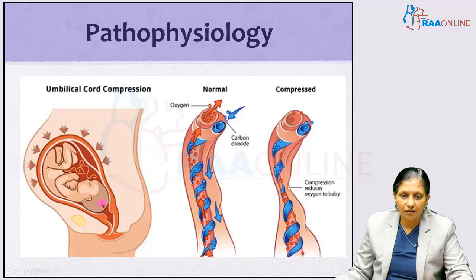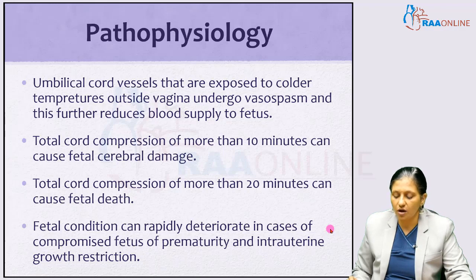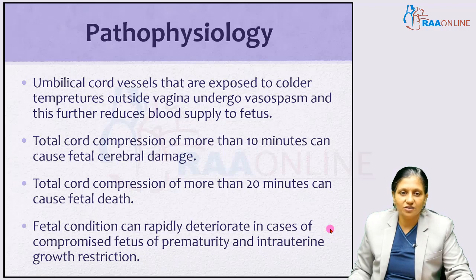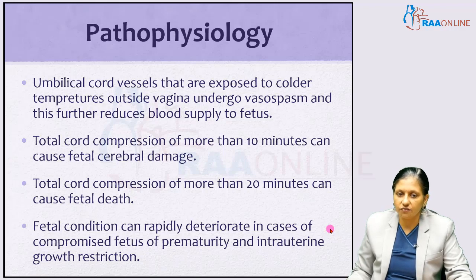Umbilical cord vessels exposed to the colder temperature outside the vagina undergo vasospasm, further reducing blood supply to the fetus. Outside body temperature is less than 37 degrees, so blood vessels undergo vasospasm causing further hypoxia. Total cord compression of more than 10 minutes can cause irreversible fetal cerebral damage, and more than 20 minutes can cause fetal death. This is a dire obstetrical emergency, and fetal condition can rapidly deteriorate in cases of prematurity and intrauterine growth restriction.